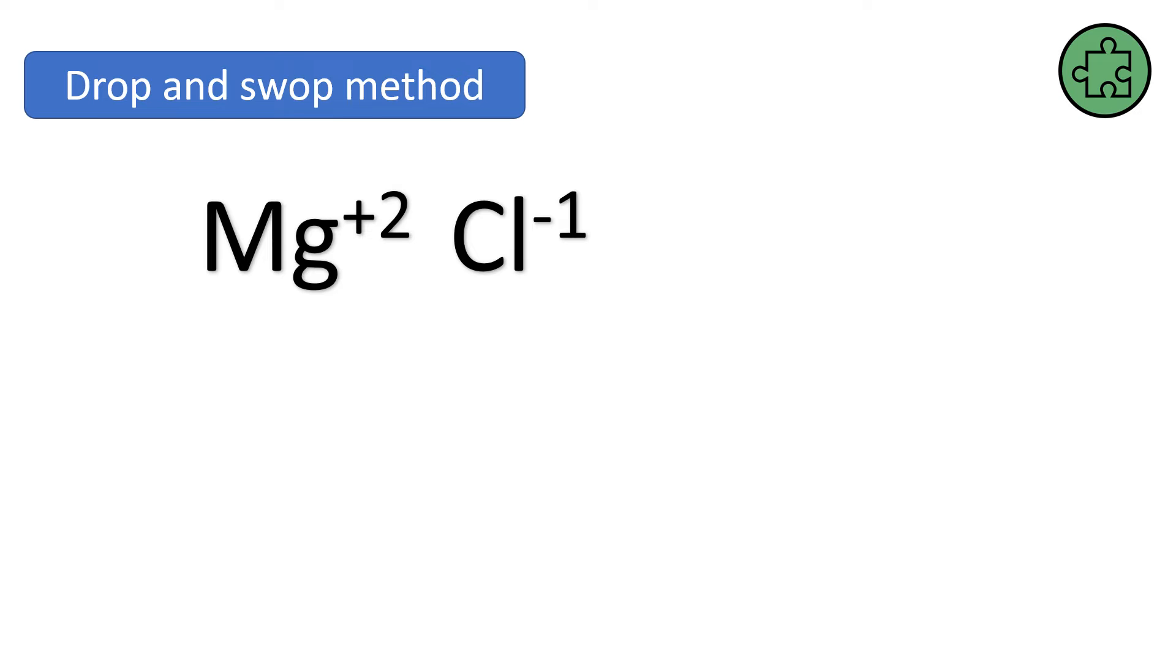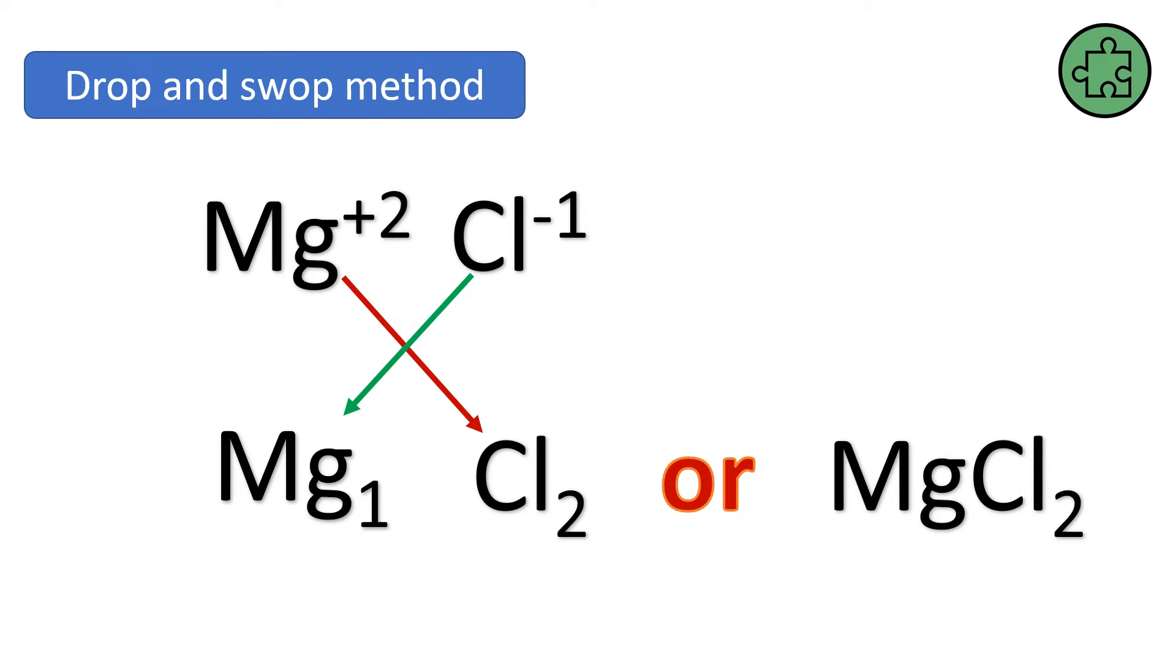Now if you get confused with trying to work out ionic formula, there is another method called the drop and swap method. Don't really like teaching it. You don't really understand why it's working, but it does work every time. So if you're struggling, this is a good one. So you've got here Mg²⁺ and Cl¹⁻. They're your ions. So what's the formula going to be? Well, you drop the letters, so Mg and Cl, and then you swap the numbers. So this becomes Mg1 and this becomes Cl2. Notice there's no pluses or minuses because we lose those charges. Or you would just write MgCl2. And this works every time.